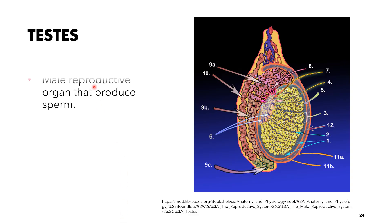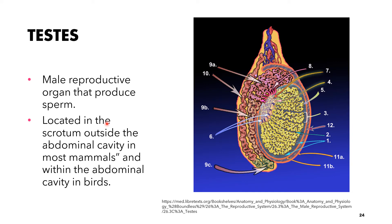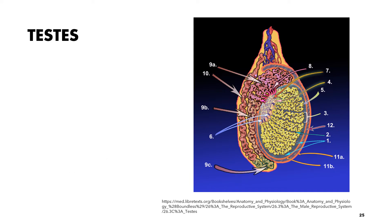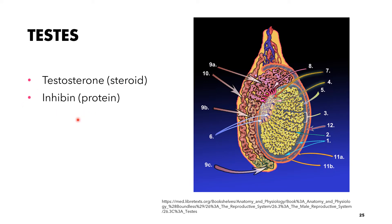The testes is the male reproductive organ that produces spermatozoa. It is located in the scrotum outside the abdominal cavity in most mammals, and within the abdominal cavity in birds. The testes is responsible for the production of the steroid hormone testosterone, as well as inhibin, which is a protein hormone. Inhibin is produced in the testes by the Sertoli cells, but can also be produced in the ovary via the granulosa cells.